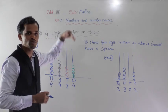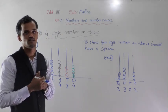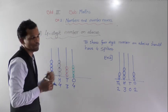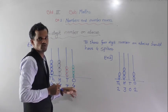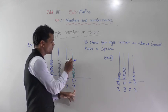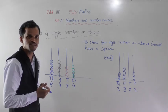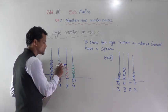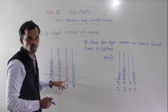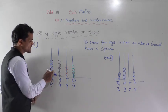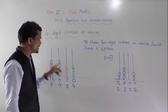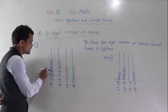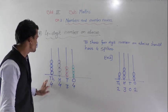We put bits onto the spikes. Here I put 4 bits at the 1s place, so it shows 4 ones. In the 10s place I put 3 bits, so it shows 3 tens. In the 100s place I put 4 bits, so it shows 4 hundreds. And in the 1000s place I put 4 bits, so it shows 4 thousands. So this number is 4434.